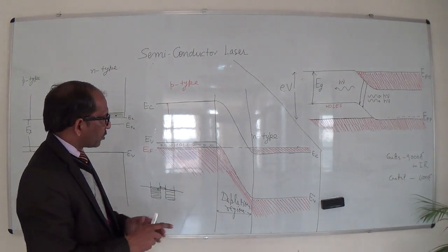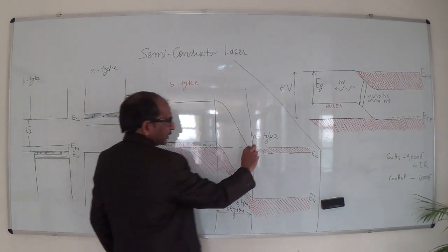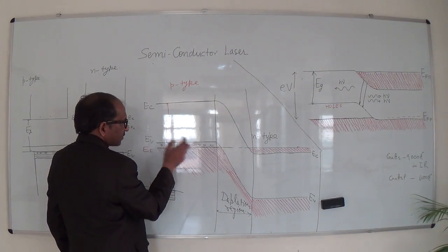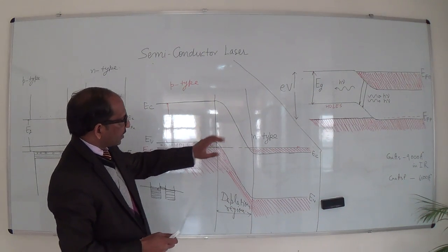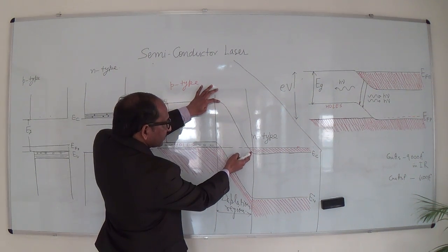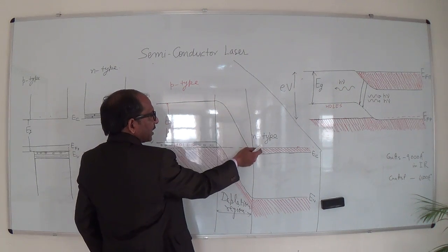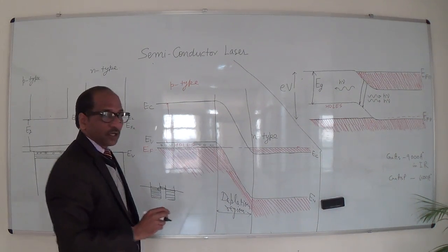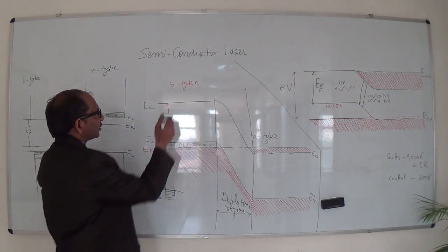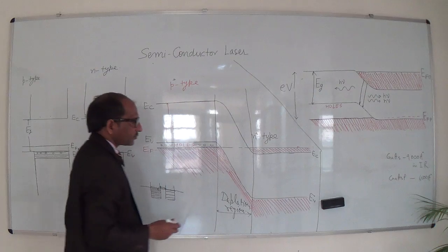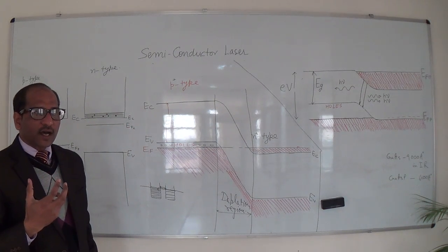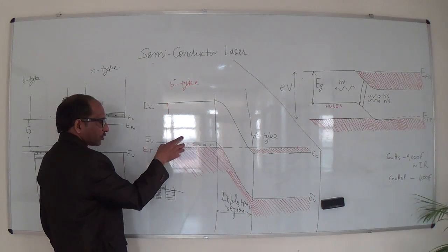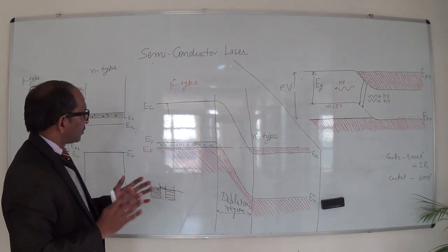Without any biasing, we observe that there are charge carriers: electrons in the N-type semiconductor in the conduction band, and holes in the valence band in the P-type region. The barrier height V₀ prevents electrons from jumping from the N side to the P side. Importantly, this is a very highly doped semiconductor material — P-plus and N-plus — so majority charge carriers fill the conduction band and majority holes fill the valence band.